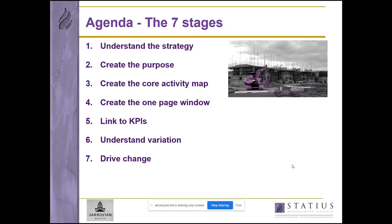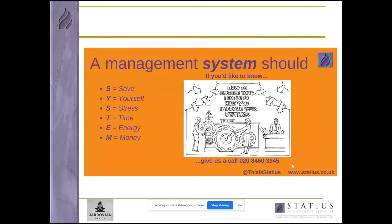We need KPIs to be linked to processes so you know if what you're doing to improve and drive cash to the bottom line is working. We also need to know about variation and driving change in the organization. Let's take a quick peek at what any system should do for you — a system should save you time, stress, energy and money, and push cash to the bottom line. So how do we normally present data and measure progress?